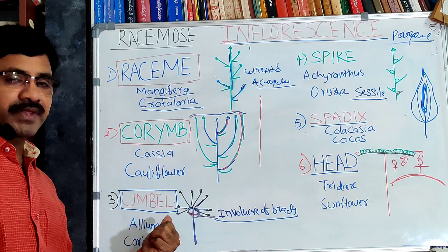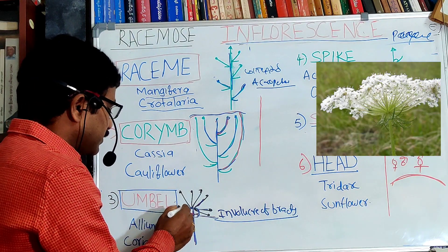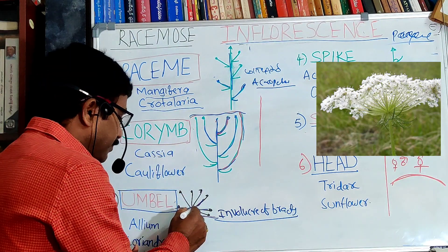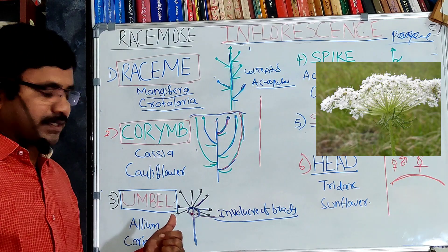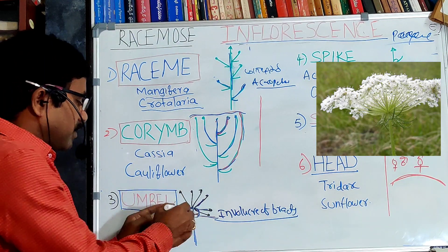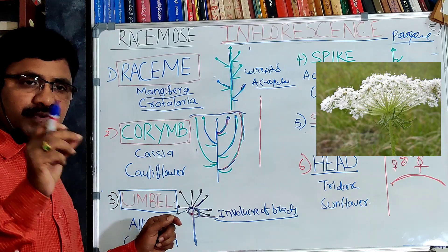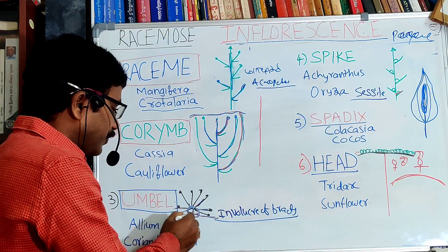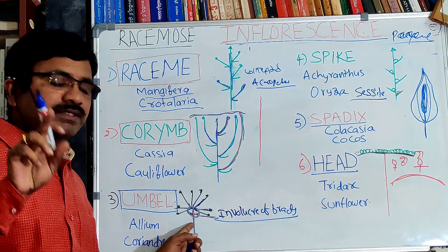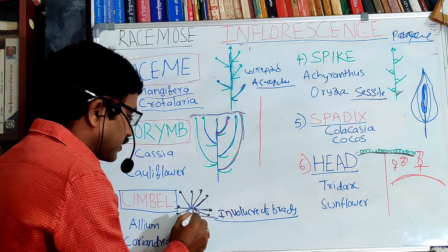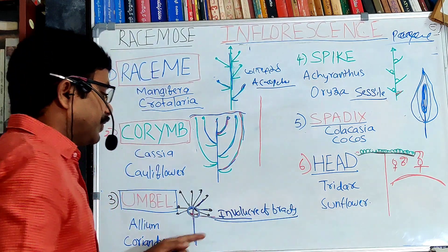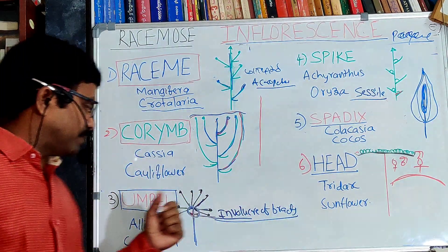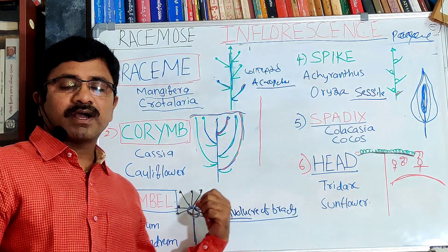The third type is umbel. In umbel inflorescence, flowers arise in the form of a bunch from the tip of the peduncle. All flowers are bracteate and pedicillate. An important character is that the bracts of all flowers fuse to form a circular structure called the involucre of bracts, which is the unique character of umbel inflorescence, found in Allium species and Coriandrum.